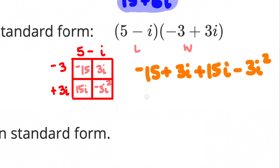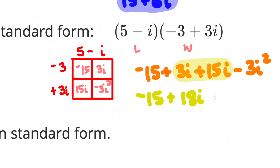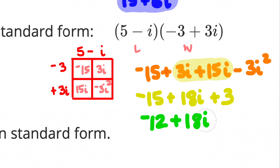Combining terms: -15 stays on its own; 3i + 15i = 18i; -3i² = -3·(-1) = +3. Simplifying the real part: -15 + 3 = -12. The final answer is -12 + 18i.